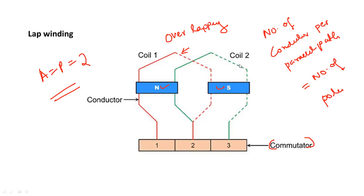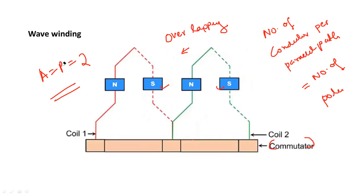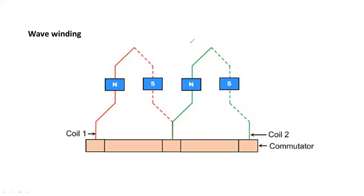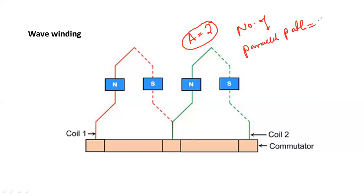Now moving on to wave winding — the second type is generally called wave winding. In case of wave winding, there is no overlapping. Always remember that in wave winding, there will always be two number of parallel paths. A is equal to two in case of wave winding. Number of parallel paths will always be equal to two only.